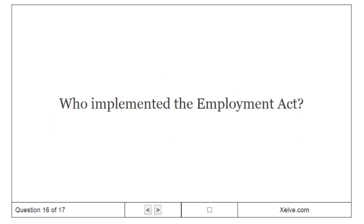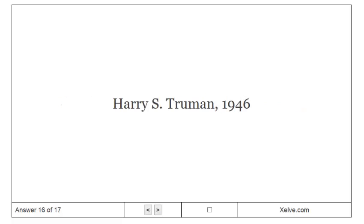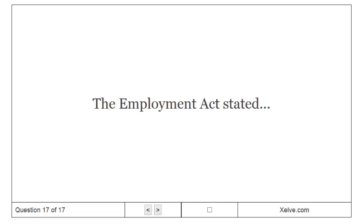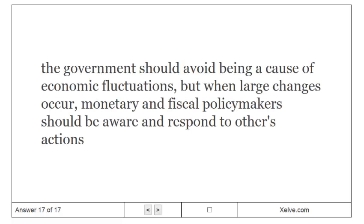Who implemented the Employment Act? Harry S. Truman, 1946. The Employment Act stated that the government should avoid being a cause of economic fluctuations, but when large changes occur, monetary and fiscal policy makers should be aware and respond to others' actions.